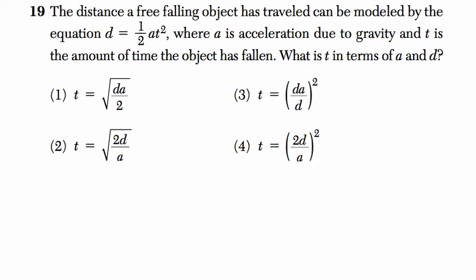Alright, so the distance of a free-falling object has traveled that— oh boy, sorry, I'll start again. The distance a free-falling object has traveled can be modeled by the equation d equals 1/2 a times t squared.